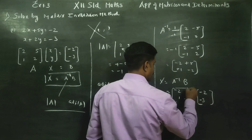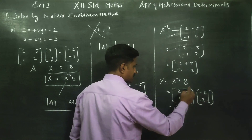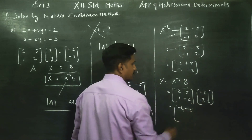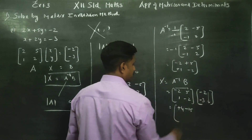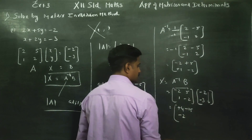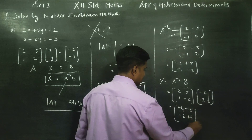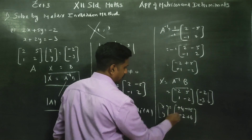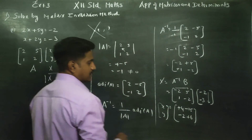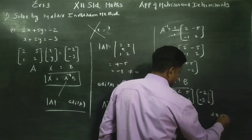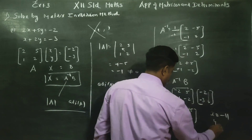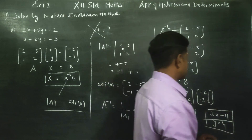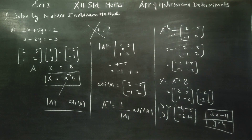Now row into column multiplication. Minus 2 into minus 2 is plus 4, and 5 into minus 3 is minus 15. Then 1 into minus 2 is minus 2, and minus into minus gives plus 6. So small x equals 4 minus 15 = minus 11, and y equals 6 minus 2 = 4. The answer is x = -11 and y = 4. Thank you.